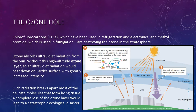First, let's discuss the ozone hole. Chlorofluorocarbons, or CFCs, which have been used in refrigeration and electronics, and methyl bromide, which is used in fumigation, are destroying the ozone in the stratosphere. Ozone absorbs ultraviolet radiation from the sun. Without this high-altitude ozone layer, ultraviolet radiation from the sun would beat down on Earth's surface with greatly increased intensity. Such radiation breaks apart most of the delicate molecules that form living tissue, and a complete loss of the ozone layer would lead to a catastrophic ecological disaster.